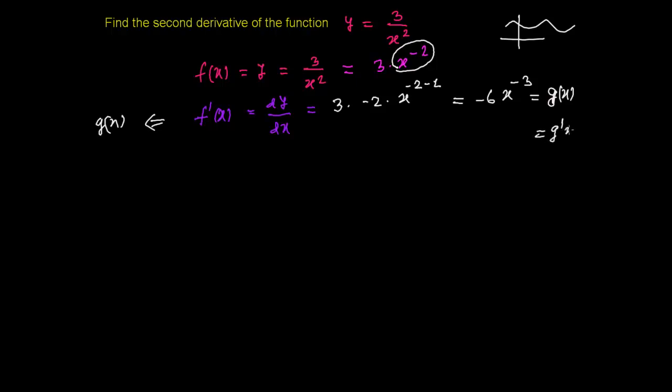And now I can easily find out the derivative of this g of x function, which is actually g prime of x or you can say here this is f double prime of x or you can say d square y over dx square is now equals to minus 6 times x to the power minus 3. So now I'm going to find out the derivative of this function.